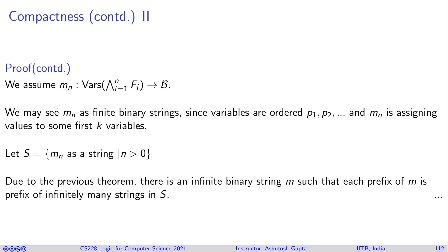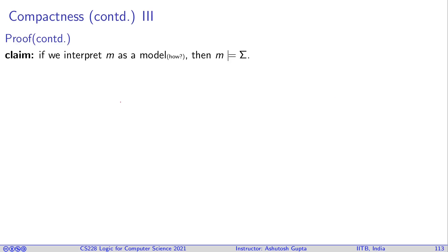Let S equals to the set of M_N as strings, N greater than 0. You collect all those strings, you get S. Due to the previous theorem, there is an infinite binary string M such that each prefix of M is prefix of infinitely many strings in S. It's very much mouthful and it needs a few readings to really make sense what it is. It is just restating the theorem which we have proved. Therefore, now the claim is you can construct a model M such that M satisfies Σ. Let's see how do we do that.